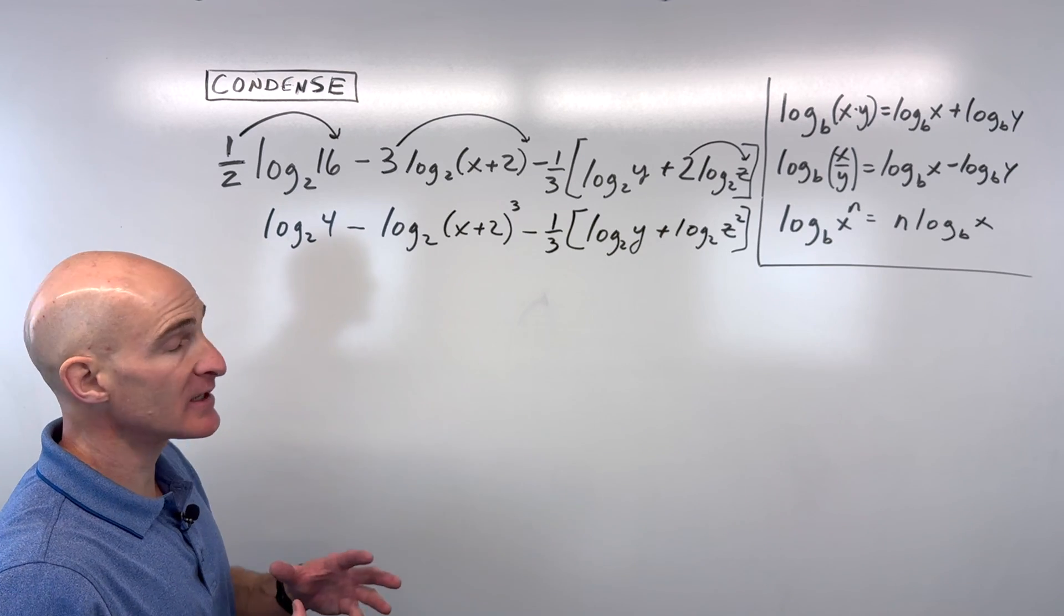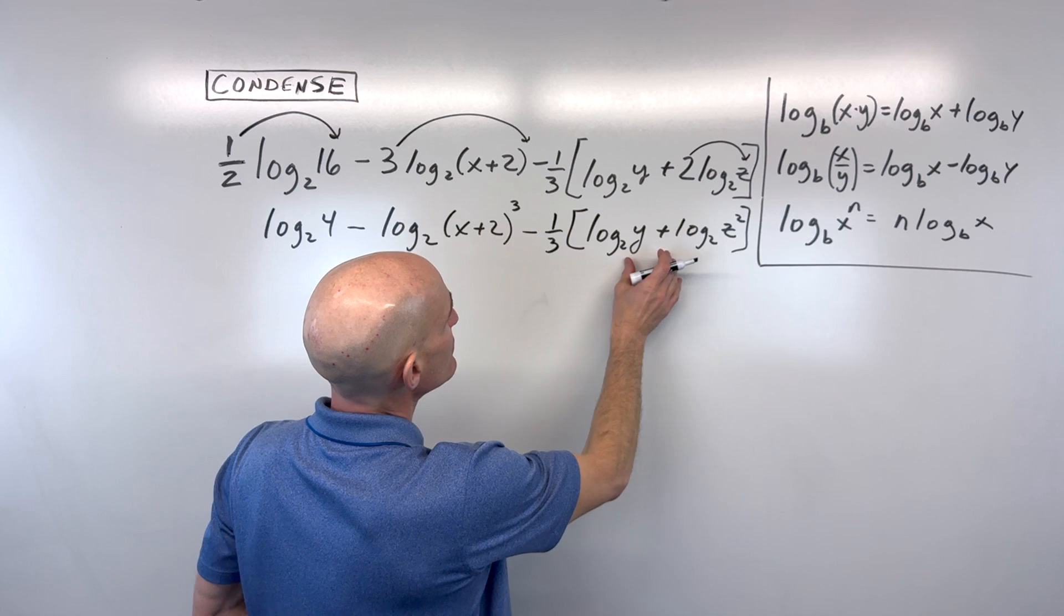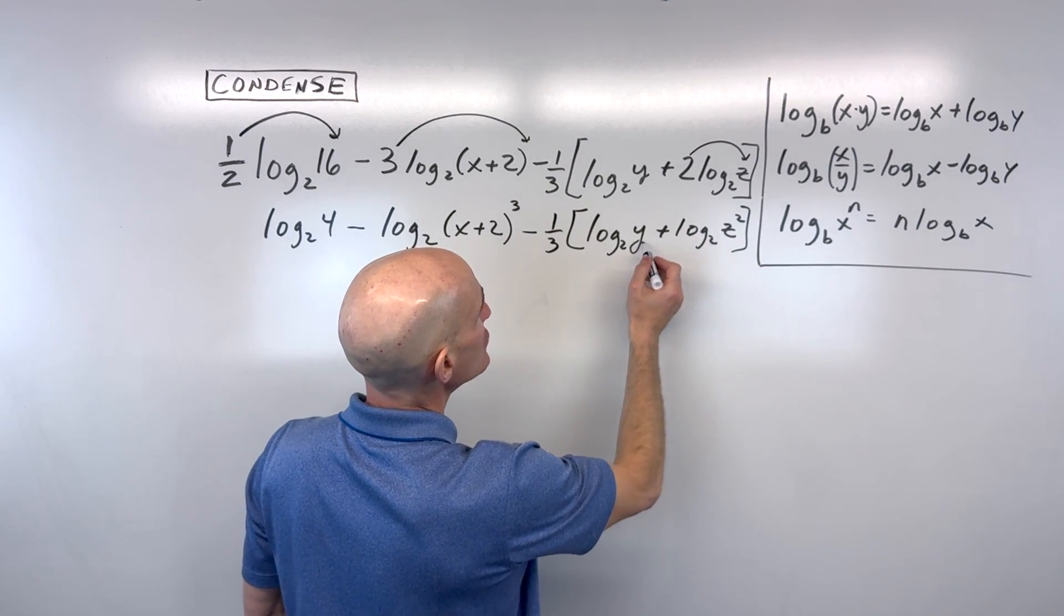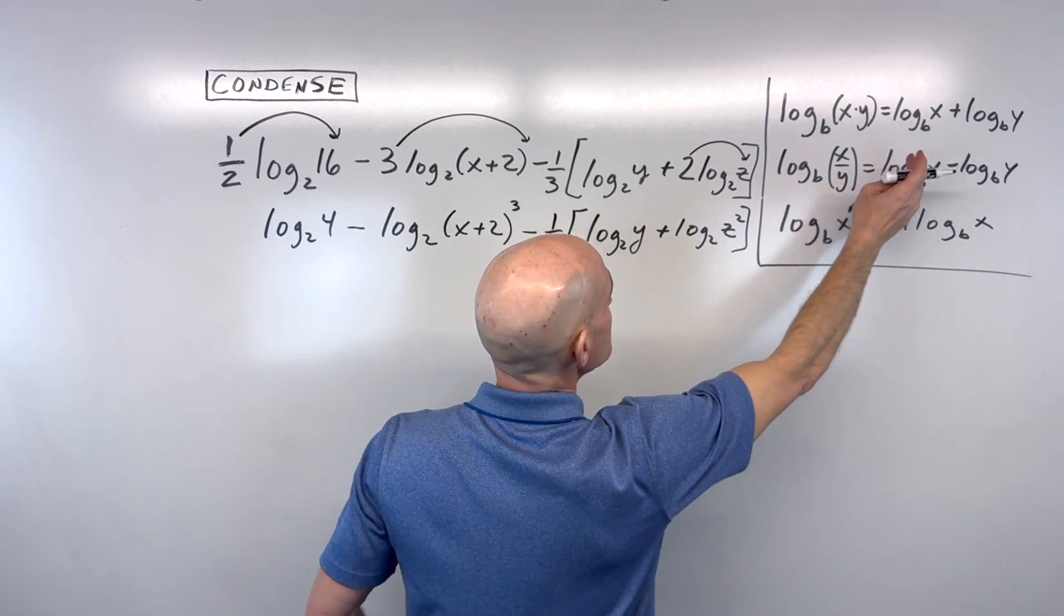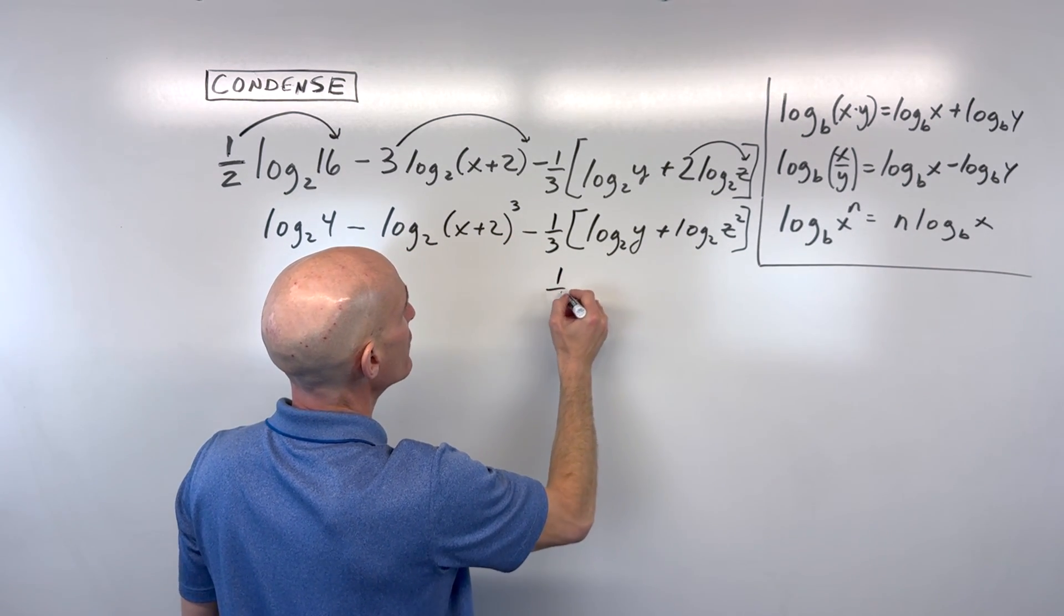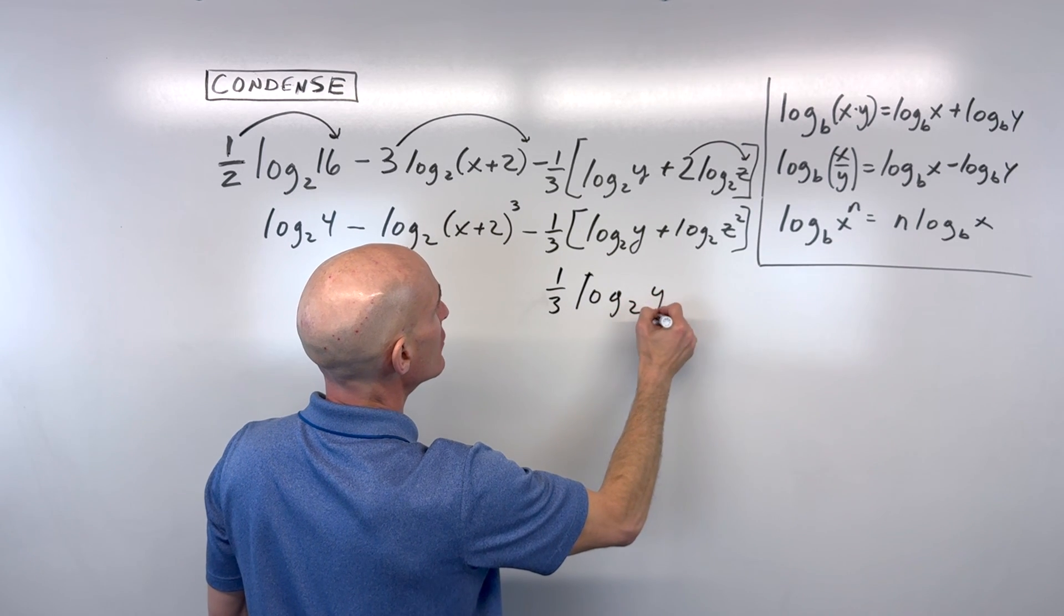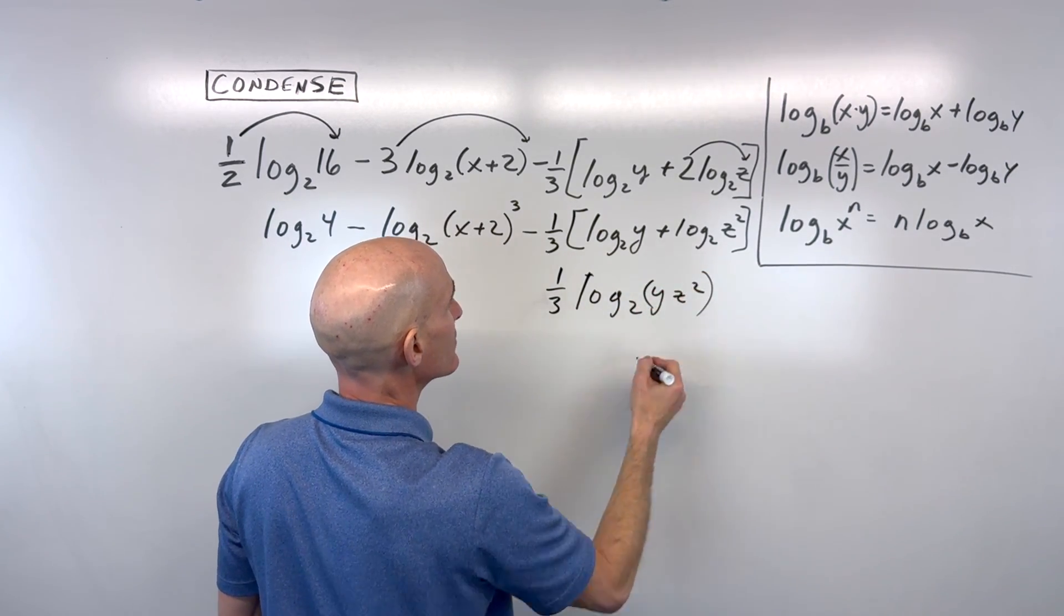So getting a little bit more condensed. What would I do from here? Well, I think I would keep working with these parentheses here. When we add, what do we do to the arguments? We multiply. So that's this product property here of logarithms. So this is going to be one-third, and I'm just going to condense this into log base 2 of y z squared.